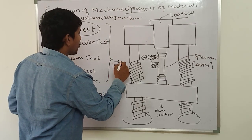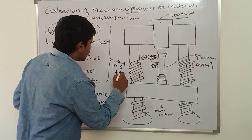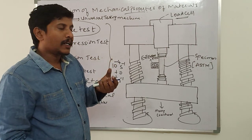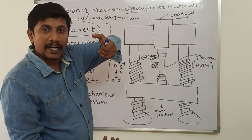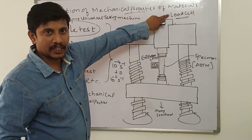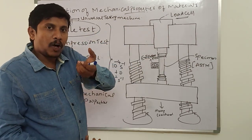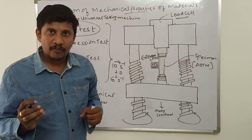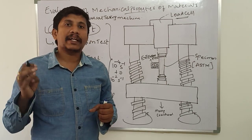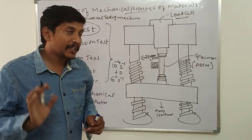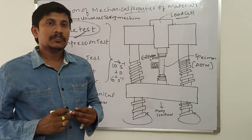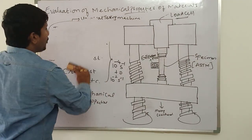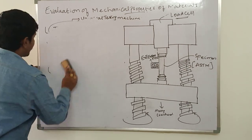The load is applied gradually, with strain rates of 10 power minus 4 per second to 10 power minus 2 per second. Small strain rates are gradually applied and the specimen gets elongated under increasing load until it fractures. Properties like yield point, percentage of elongation, ultimate tensile strength, breaking point, and resilience are noted.